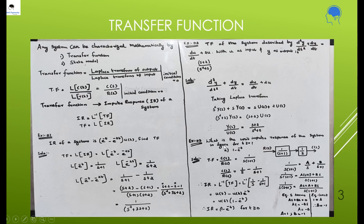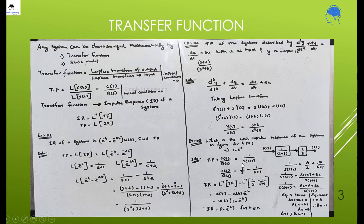Next example: what is the unit impulse response of the system given in the figure for t greater than or equal to 0, which is 1 minus e^(-t)? Here it is given as 1/(s+1) then 1/s, output is C(s) and input is R(s). So transfer function is C(s)/R(s), which equals 1/(s(s+1)).